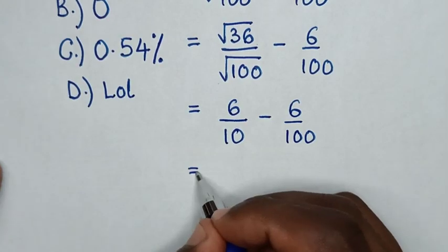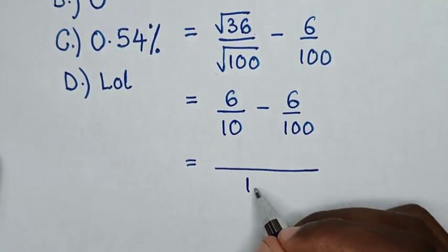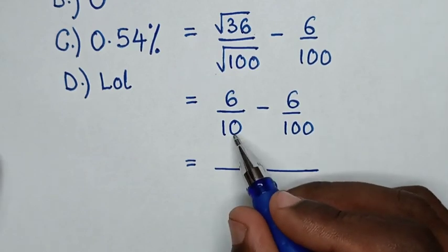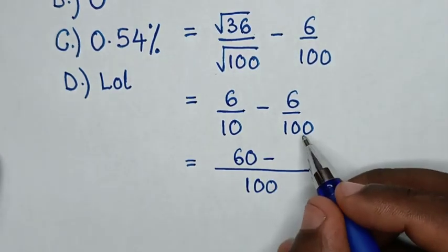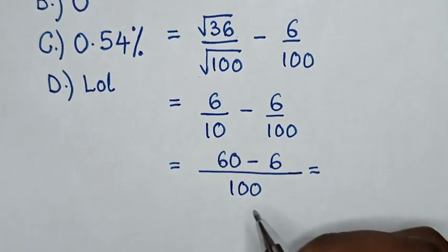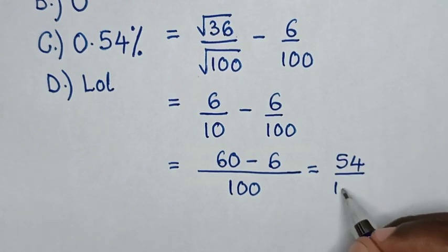Then it equals, the LCM of 10 and 100 is 100. 100 divided by 10 is 10, 10 times 6 is 60. Then minus, 100 divided by 100 is 1, 1 times 6 is 6. This equals 60 minus 6, which is 54 over 100.